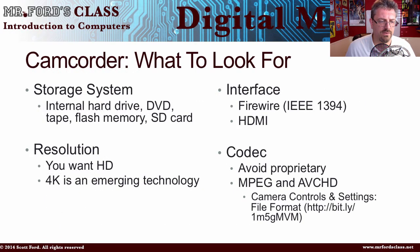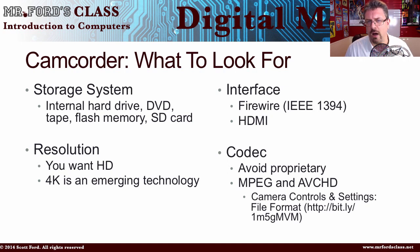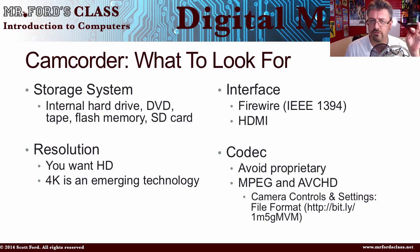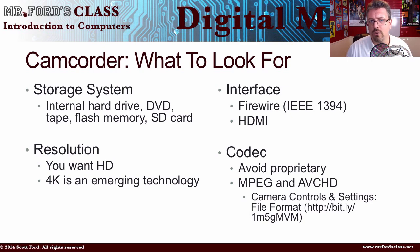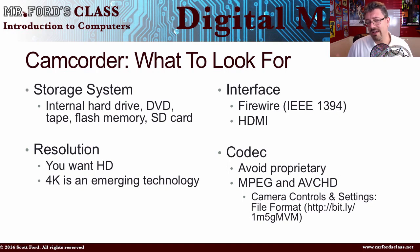Let's talk about camcorders — what should you look for if you want to buy one? The first thing is probably your storage system: how are you going to store the information? Are you going to use an internal hard drive, burn to DVD, record to tape, flash memory, or an SD card? Removable media cards or flash memory are the way to go, because you just drag the files onto your computer and you're done.